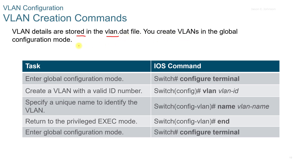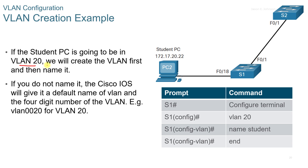You can create VLANs in global configuration mode. Go into config terminal, set the VLAN ID, use the name command with the VLAN name, and then type end. For example, if the student PC is going to be VLAN 20, create the VLAN first and then name it. If you do not name it, the Cisco IOS will give it a default name of VLAN followed by the four-digit number, for example VLAN 0020. It is recommended to always name VLANs with a logical name you can recognize.